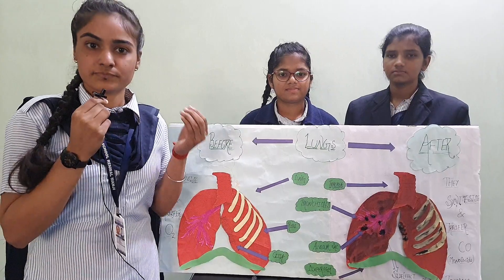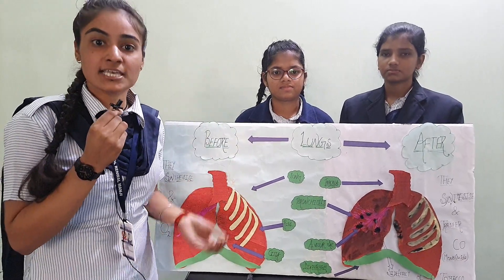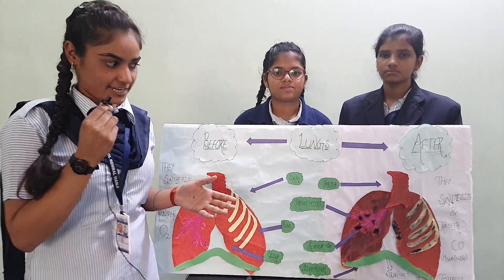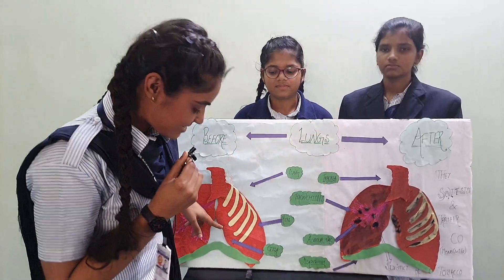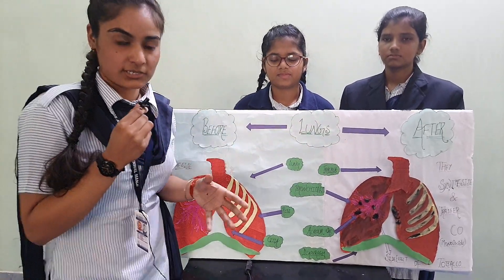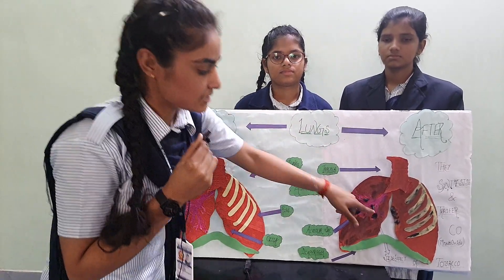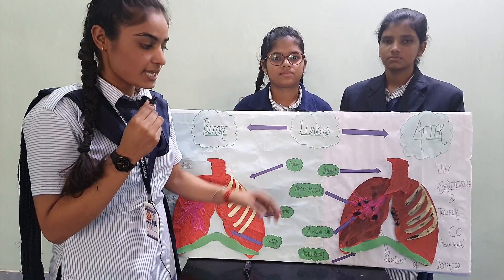But when we take or consume a tambaku substance like cigarettes, this cilia gets burned. And because of this, our lungs get destroyed.